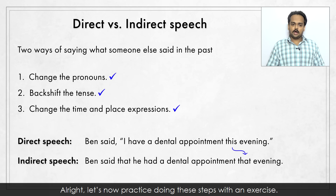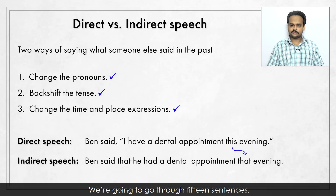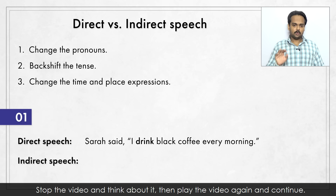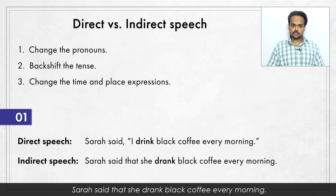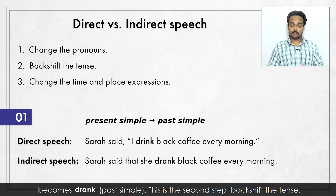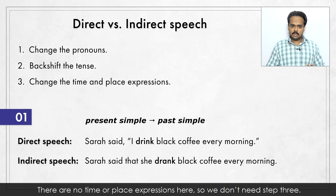Let's now practice doing these steps with an exercise. We're going to go through fifteen sentences. Here's the first one. Sarah said, "I drink black coffee every morning." The indirect speech sentence is: Sarah said that she drank black coffee every morning. "I" becomes "she" – that's step one, change the pronouns. "Drink", which is in the present simple tense, becomes "drank" – past simple. This is the second step, backshift the tense. There are no time or place expressions here, so we don't need step three.